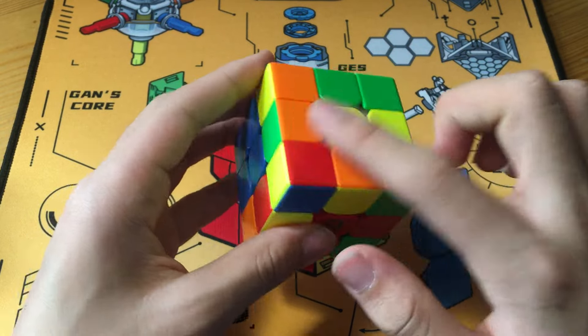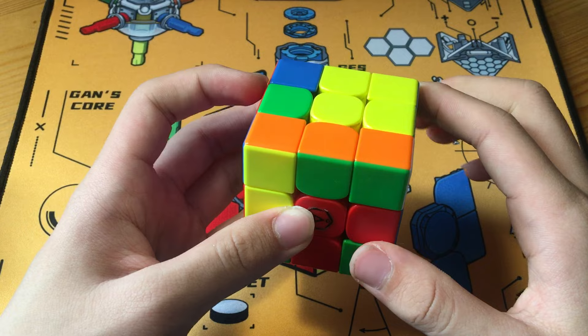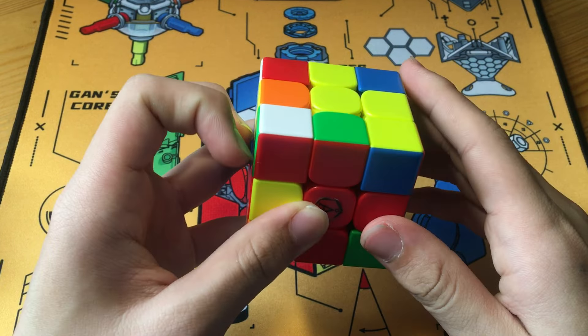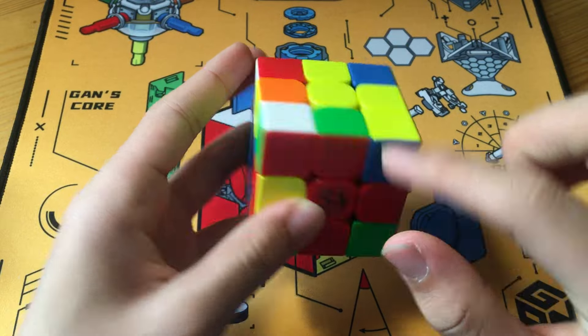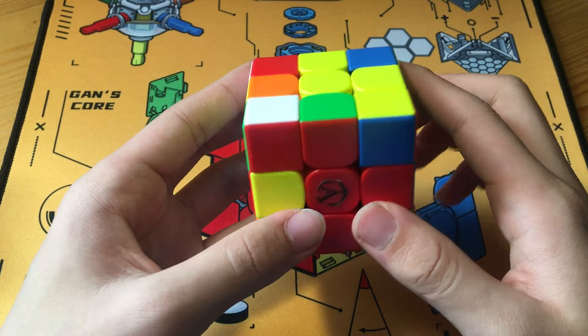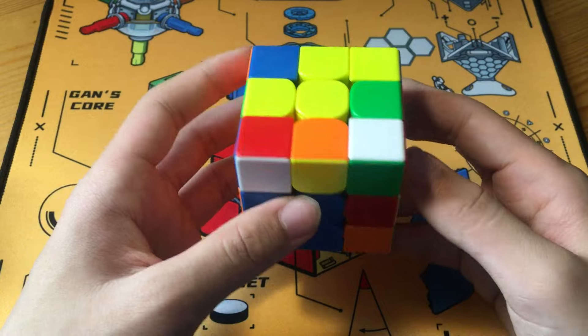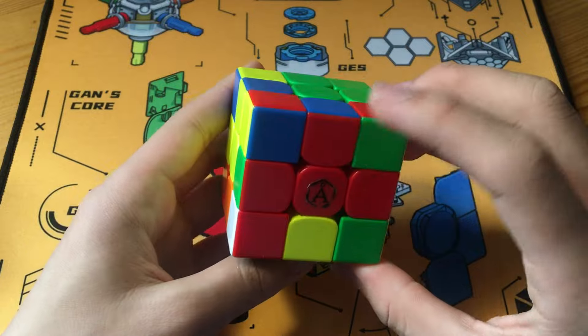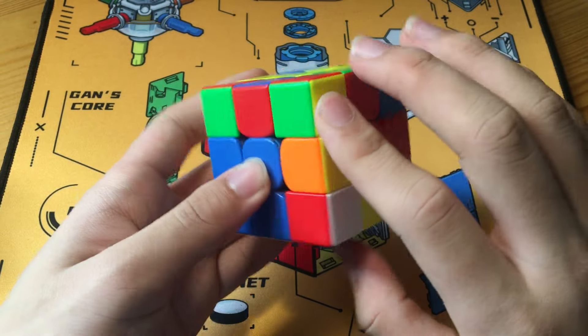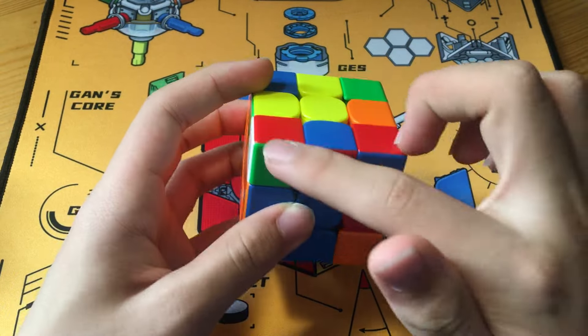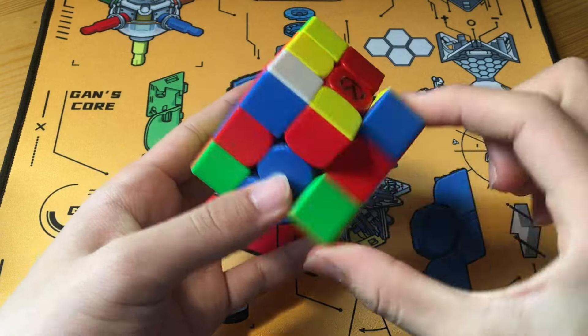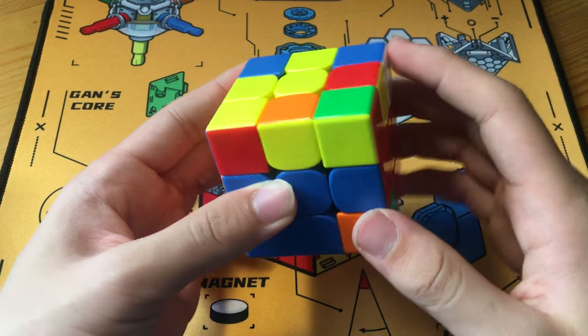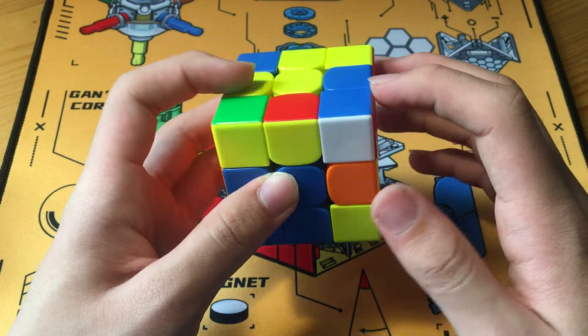And here, Kyle notices this is a very nice pattern. So, pairing these two up and solving these, because that would give him this case. And what is special about this case is that it can very, very quickly execute it. Because what he does for this pair is to insert this at the back, this edge at the back, and solve this corner into its slot using keyhole,